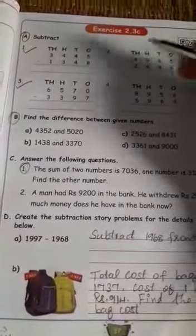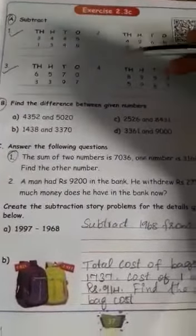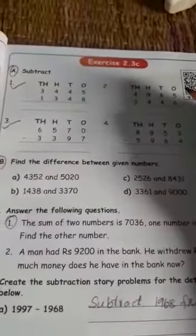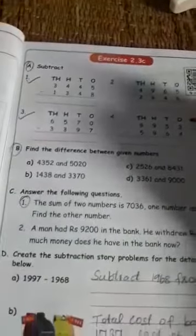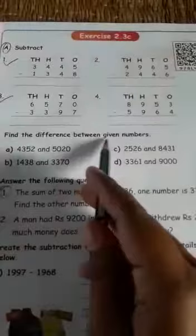Take page number 37. Subtract 4 numbers. 4 sums are given, you should write in your book only. First A only, A sum only you write in your book. No need to write in your maths note. And then find the difference between the given numbers.